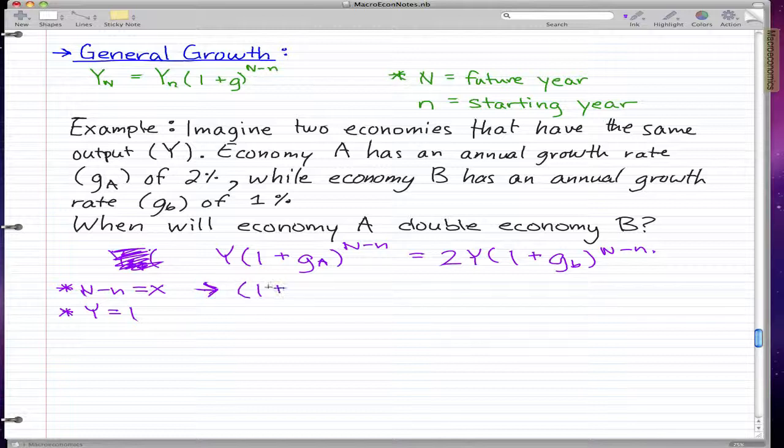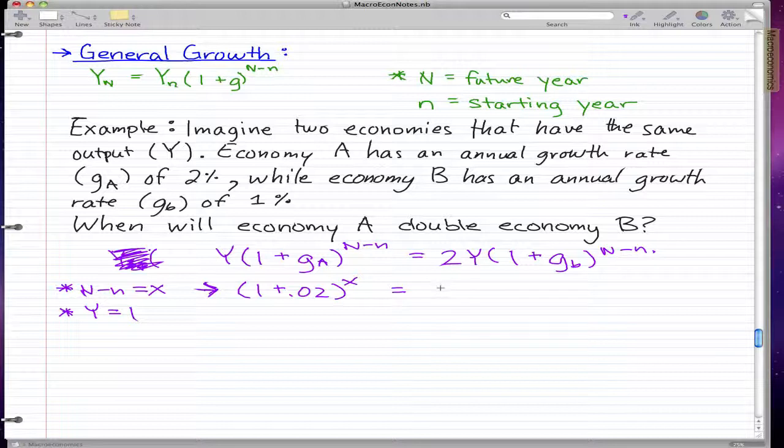So redoing our formula, we have 1 plus G A is 2%, so it's 0.02 to the power of X equal to 2 times 1, because we set Y to 1, times 1 plus economy B's growth rate 0.01 to the power of X.